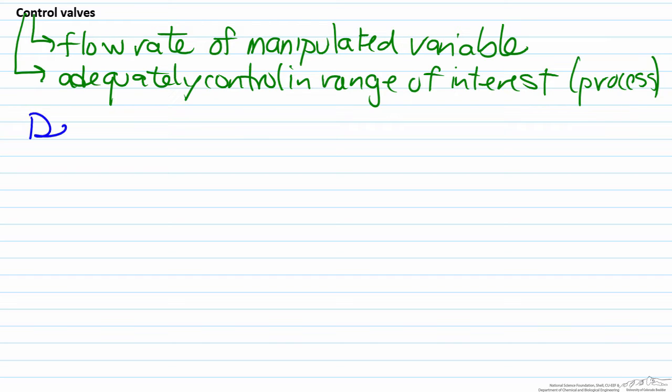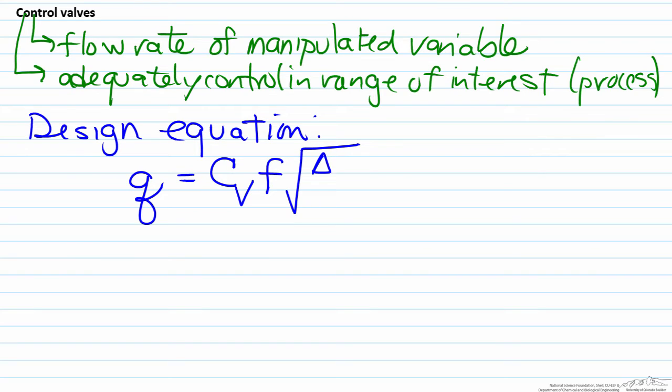The design equation for the control valve can be represented by the following relationship, where Q equals CV multiplied by F multiplied by the square root of delta PV over Gs. Now let's go through what each of these variables represents. Q represents the flow rate of whatever fluid you have.